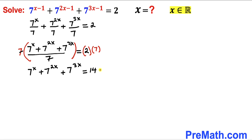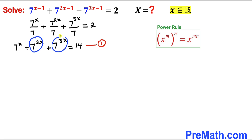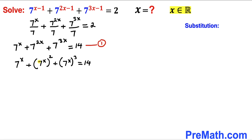I'm going to label this as equation number 1. Now let's recall the power rule of exponents: if we have x^m and then another power n, then this whole thing equals x^(m×n). We are going to apply this rule on these two terms on the left hand side, so we can write 7^x + 7^(x²) + 7^(x³) = 14.